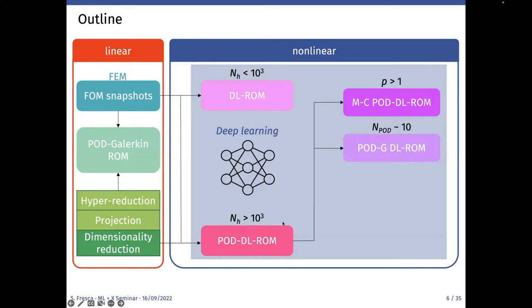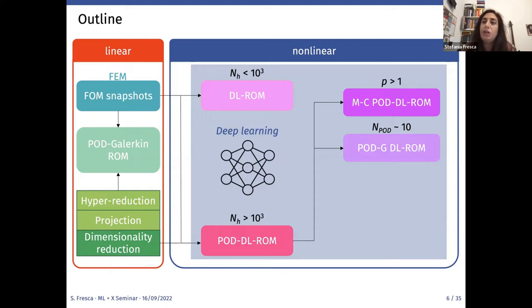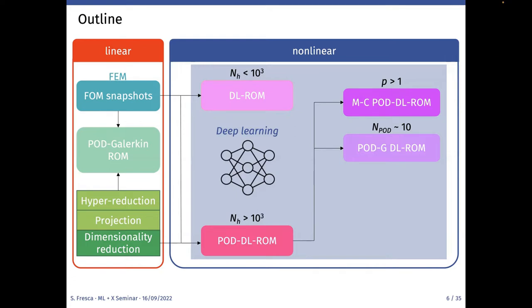Question from audience: Can you motivate the use of POD and DL? When you say deep learning, you mean the autoencoder — why go back to POD? In the POD-DL-ROM context, POD serves a different purpose than in a POD-Galerkin ROM. We use POD only as a first layer, like a filter, to reduce dimensionality — for example, from one million degrees of freedom to one thousand — but not to capture the intrinsic dimensionality of the problem. It will be clearer in the rest of the presentation.